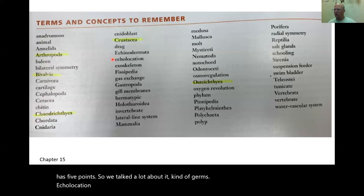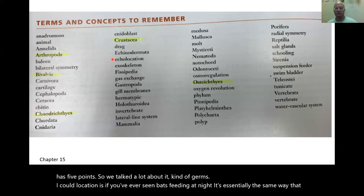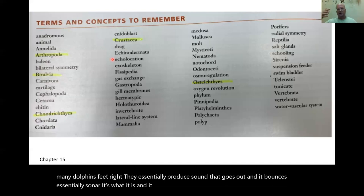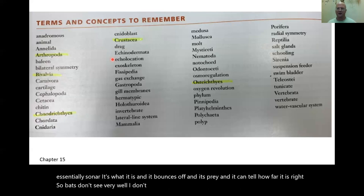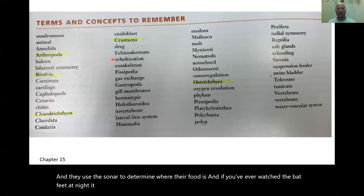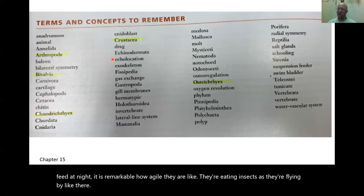Echolocation — if you've ever seen bats feeding at night, it's essentially the same way many dolphins feed. They produce sound that goes out and bounces back — it's essentially sonar. It bounces off prey and they can tell how far away it is. Bats don't see very well, and they use sonar to find food. If you've ever watched a bat feed at night, it's remarkable how agile they are, eating insects in flight.